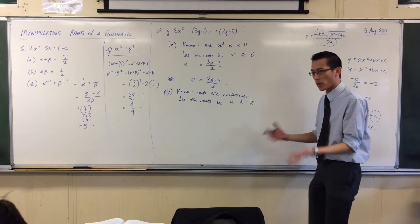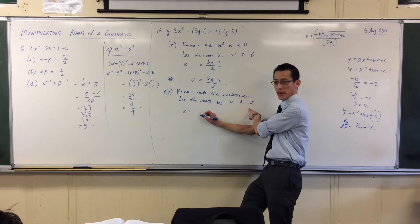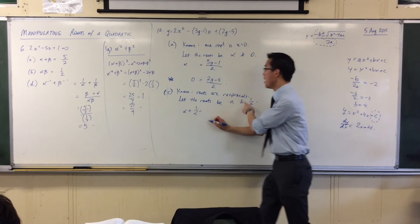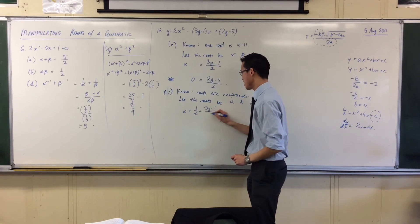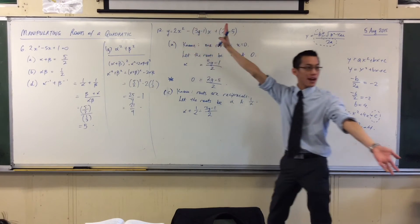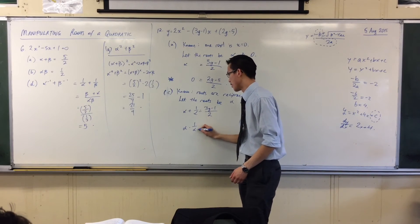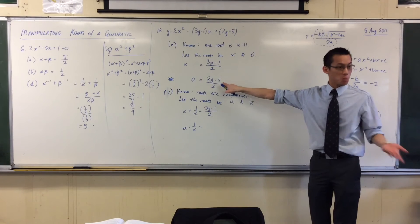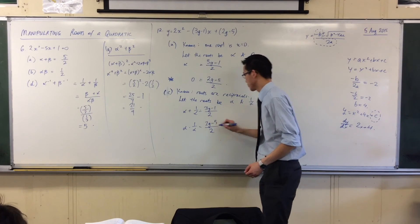So now, again, I say, what's the sum of the roots? Alpha plus, there's my second root, 1 on alpha, that's still going to be 3g minus 1 on 2. That's still the sum of the roots there, I haven't changed the quadratic. And the product, alpha times 1 on alpha, is still going to be 2g minus 5 on 2.